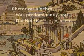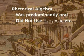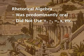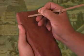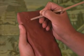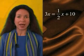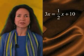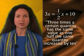Developed by the Babylonians, rhetorical algebra was dominant up until the 1500s. It was predominantly oral, as writing materials were limited in most cultures, and algebraic symbols that are commonplace today were unknown. Whenever mathematicians did transcribe algebraic equations onto clay tablets, they wrote out every word. For example, the equation 3x = ½x + 10 would have looked something like: 'Three times a certain quantity has the same value as one half the same quantity increased by 10.'